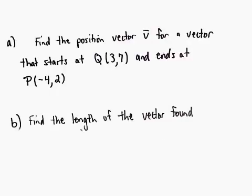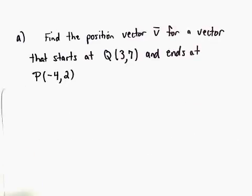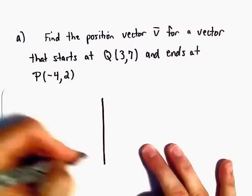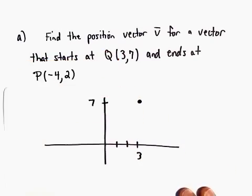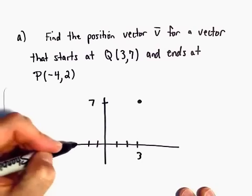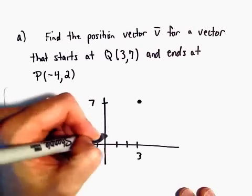In part b, we're actually going to find the length of the vector as well. So to find this position vector, again, we start at 3,7. You don't have to draw the picture at all, but I'm going to.